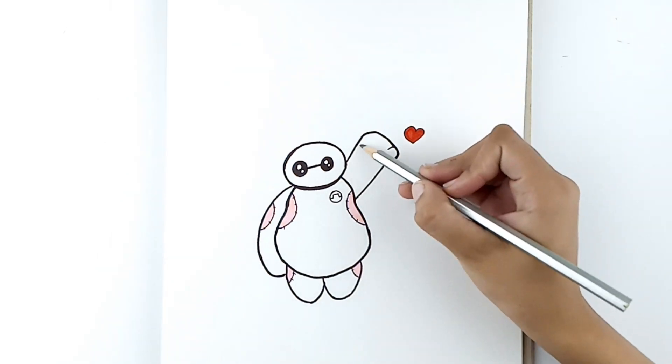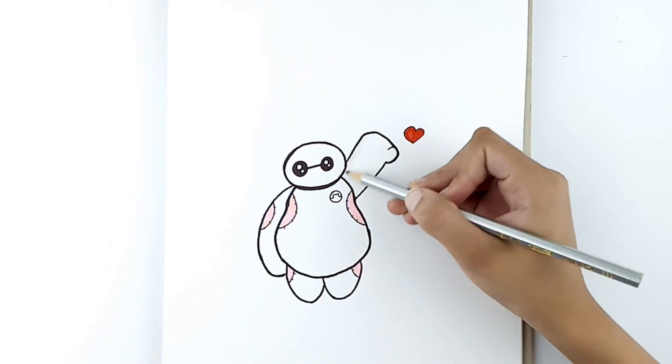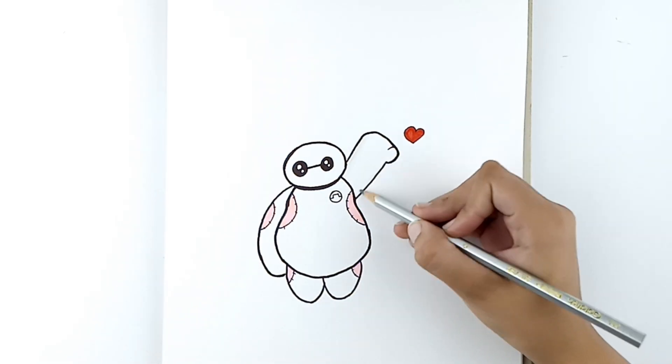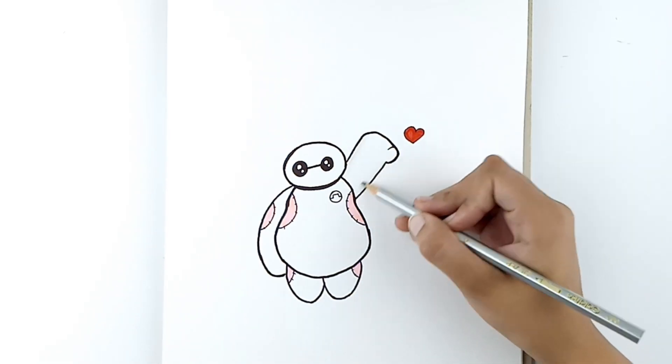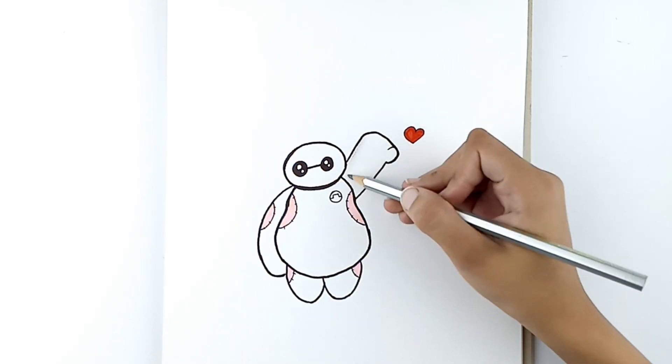You can now move on, grab a pencil and we'll start shading some parts of our Baymax to give it a nice 3D look. Add some shading to the arms.